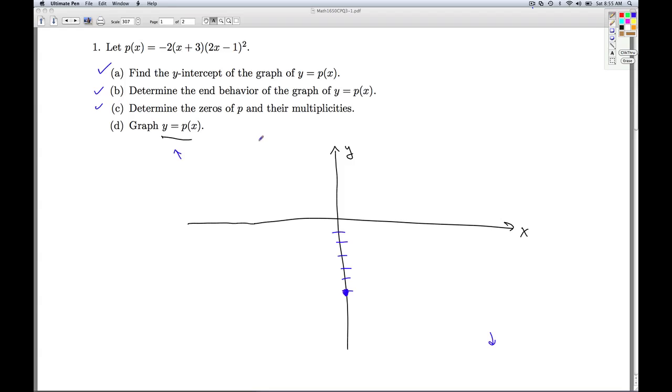We have two zeros, negative 3 and one half. It's going to cross through at the negative 3, and it's going to touch at the one half.